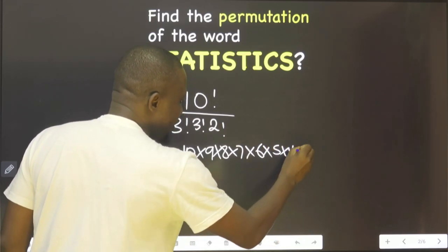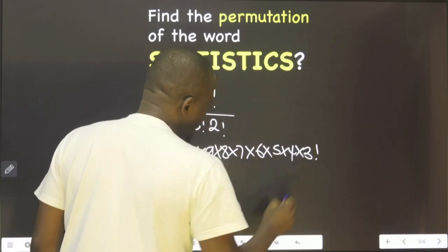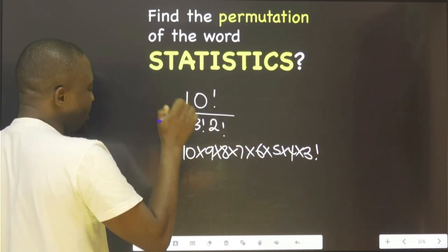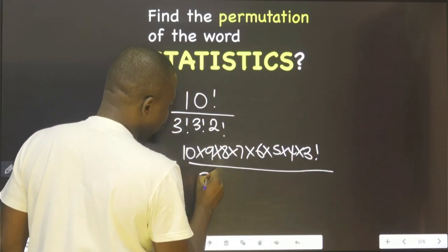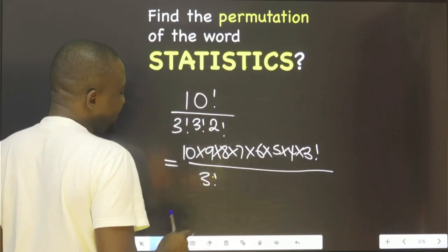Multiplied by 3. Because I'm seeing this 3 factorial, I will just stop because I want this to cancel this. Then I do 3 factorial. This 3 factorial and this 3 factorial will cancel.